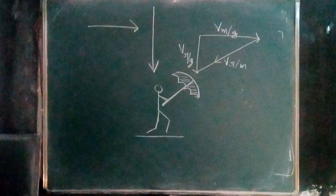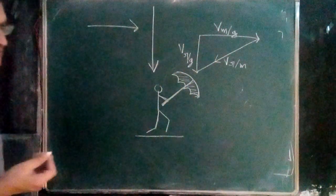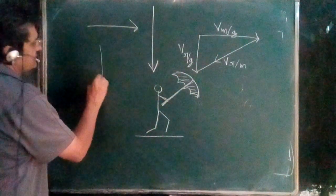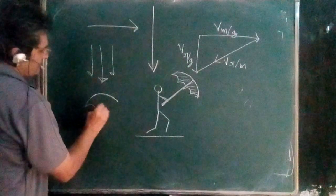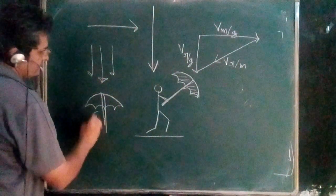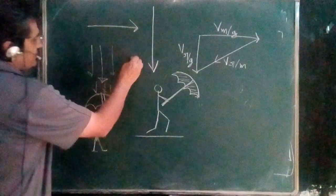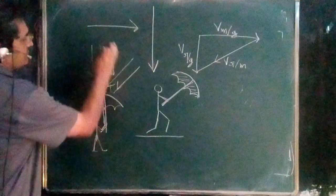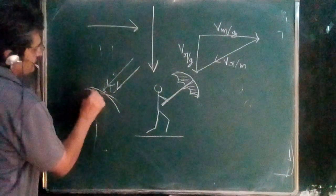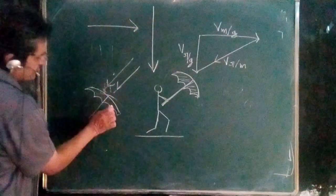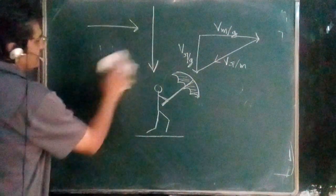In this lecture we'll discuss the useful concept of the man holding an umbrella moving in rain — what should be the angle of the umbrella to protect himself? Suppose rain is falling vertically downwards and the man is not moving; he'll simply hold the umbrella straight. Now suppose the rain is falling at an angle and the man is again stationary — he will simply tilt the umbrella in that direction. By intuition we do it in real life without measuring the angle.